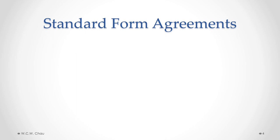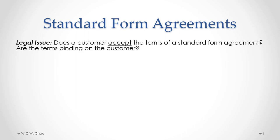Standard form agreements are great for businesses in that they allow them to enter into many contracts efficiently, knowing that all transactions have the same standard terms that minimize legal risk. But they do present a legal issue with respect to whether a customer has actually accepted the terms. Remember, to form a contract we need an agreement, and to have an agreement we need offer and acceptance. When a customer quickly signs a contract or clicks an 'I agree' button online, quite often the customer doesn't read the contract at all, let alone understand what's written. So in that situation, are the terms binding on the customer? Did the customer actually accept all the terms of the standard form agreement?